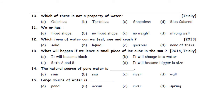Question ten: Which of these is not a property of water? A. Odorless. B. Tasteless. C. Shapeless. D. Blue colored. Water has no odor, no taste, no shape, and also no color. In option D they are saying blue colored, but water has no color. So the answer is option D.